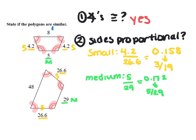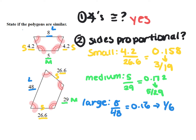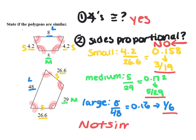For the large side, the first one is 8 and the second one is 48, so I have 8 over 48, which simplifies to 1 over 6. These ratios — 3 over 19, 5 over 29, and 1 over 6 — are not the same. So the sides are not proportional, and since this condition is not satisfied, the figures are not similar.